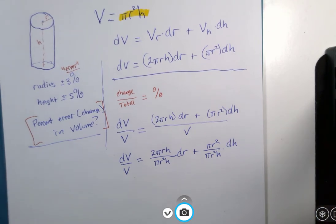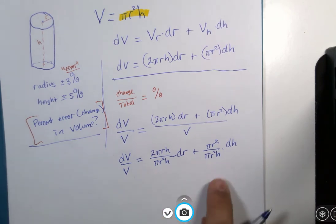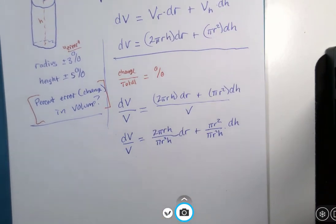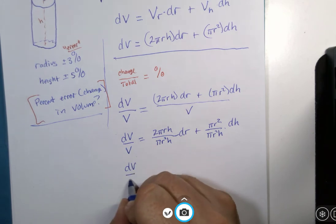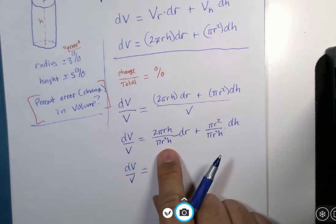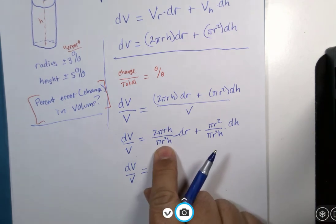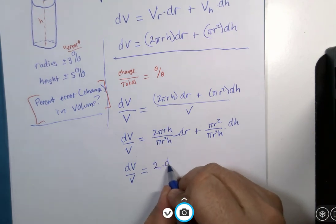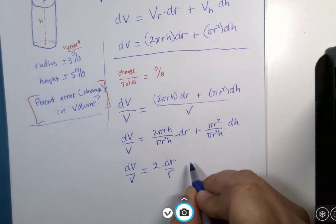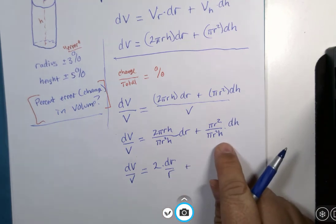Watch what happens when we reduce this algebra mess. dV over V is equal to, what do we have left here? A 2, a factor of r in the denominator. What do we have here? An h in the denominator.